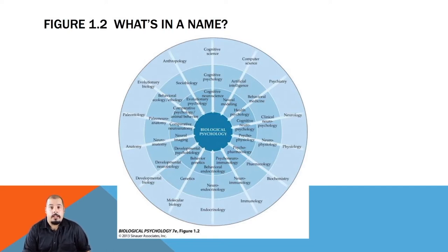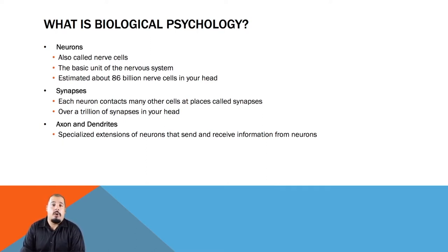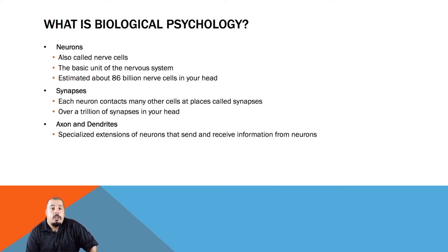Let's discuss the absolute basic structure of the nervous system, the neuron — also called nerve cells and often referred to as brain cells, even though they exist outside of the brain in various forms. There are approximately 86 billion in your head alone, so you can get an idea of how small they are — unimaginably tiny. Neurons have several parts: the soma or cell body in which the nucleus lies, the axon, and dendrites. Neurons communicate with each other using electrochemical signals.